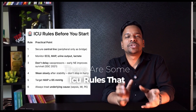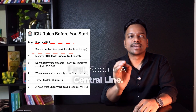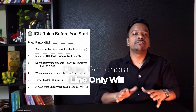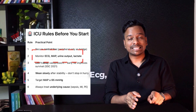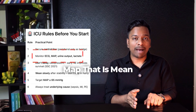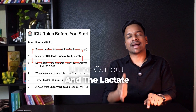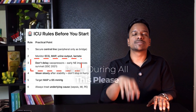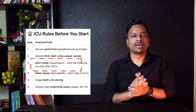Before you start the treatment, there are some ICU rules that you have to know. First, secure a central line — peripheral line will only work as a bridge. You have to monitor the patient's ECG, MAP that is mean arterial pressure, urine output, and lactate levels. Please remember to not delay initiation of norepinephrine.